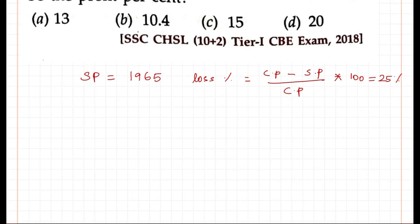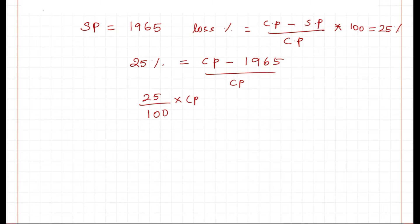Let's find the cost price first, which is 25% equals cost price minus selling price Rs.1965 divided by cost price.